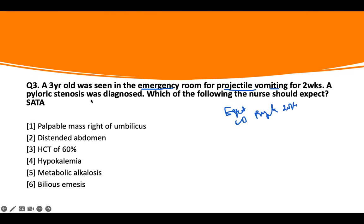A pyloric stenosis was diagnosed. So we already know it's pyloric stenosis. Which of the following is expected? I've had my buzzwords. I see pyloric stenosis, vomiting for two weeks. Which one is expected? Pyloric stenosis, two weeks, vomit, expected finding.